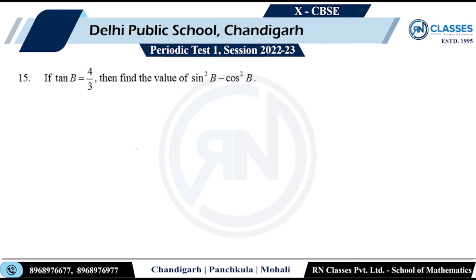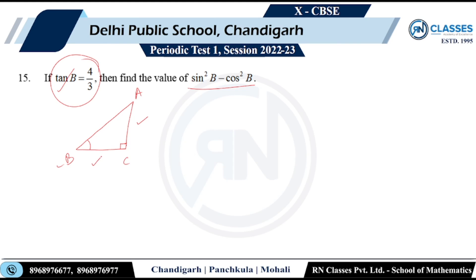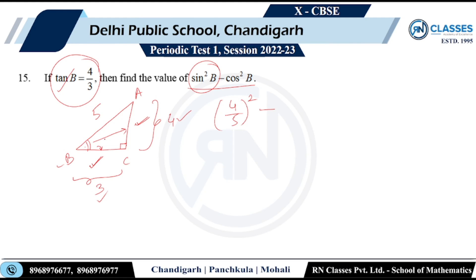Question 17: Given tan B = 4/3, evaluate sin²B − cos²B. Setting up the right triangle: perpendicular AC = 4, base BC = 3, so hypotenuse AB = 5. Sin B = 4/5, cos B = 3/5. Therefore sin²B − cos²B = 16/25 − 9/25 = 7/25.